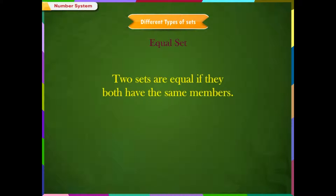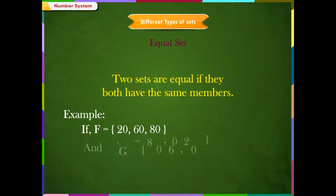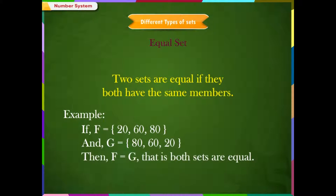Equal set: two sets are equal if they both have the same members. For example, if F is equal to {20, 60, 80} and G is equal to {80, 60, 20}, then F is equal to G. That is, both sets are equal.